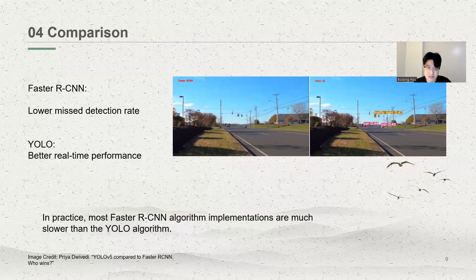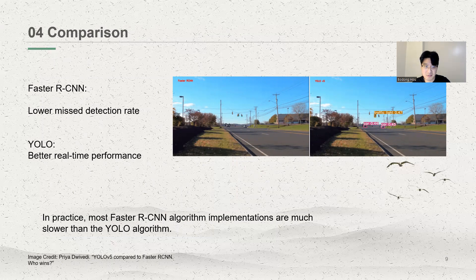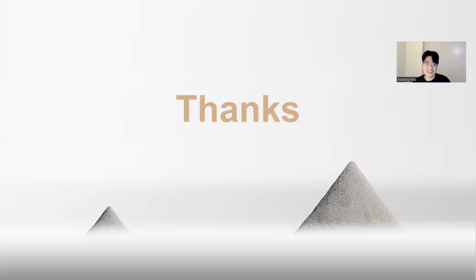In comparison, YOLO has a faster speed while Faster RCNN has higher accuracy. Due to better real-time performance, YOLO has better performance in the field of autonomous driving technology, so it is widely used in that field. Thank you so much for listening.